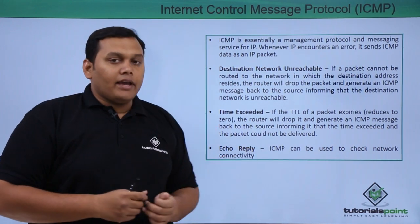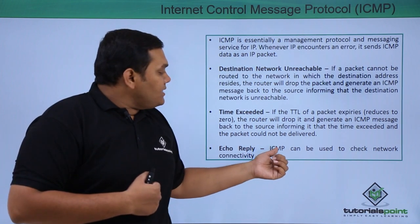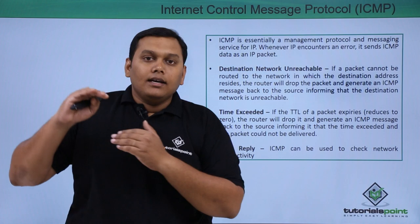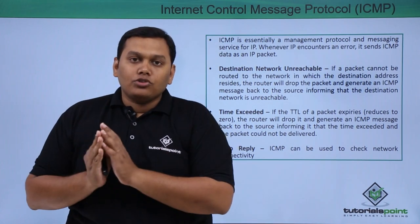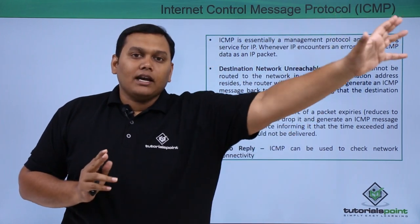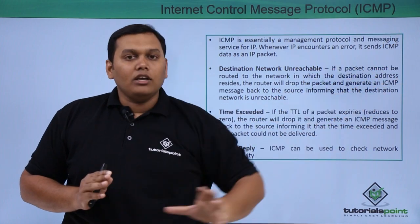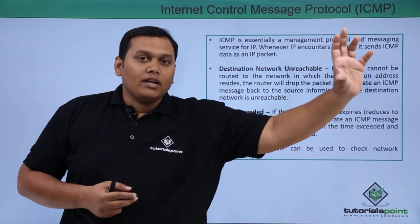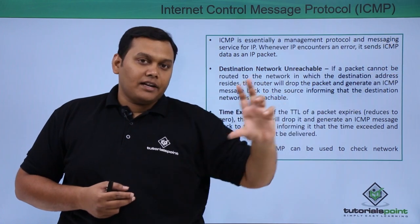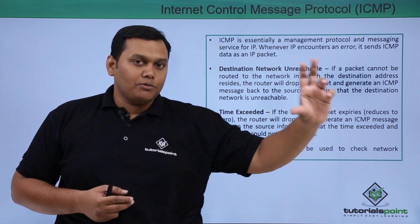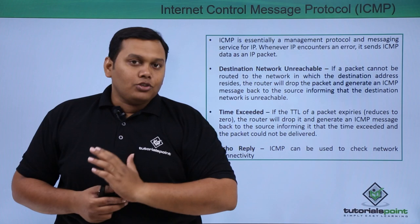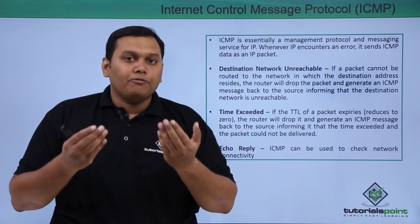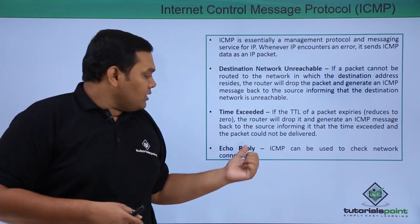The last ICMP example is 'Echo Reply.' ICMP can be used to check network connectivity from source to destination. If the network connectivity is not established or if the source is not able to communicate with the destination, the ICMP service is generated as a messaging or management protocol service back to the source, intimating that the packet cannot be forwarded because of the network connectivity issue.